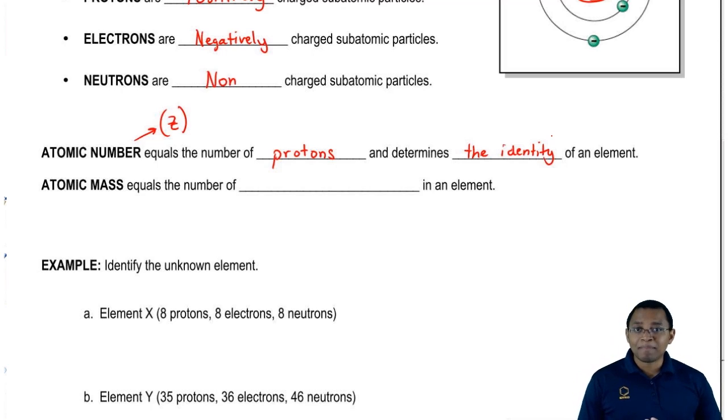We also have the atomic mass, also called the mass number, which uses the variable A. This equals the number of protons and neutrons in an element. It basically gives us everything inside the nucleus, which contains protons and neutrons.